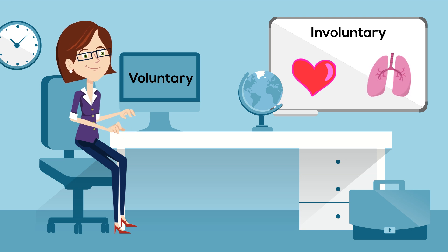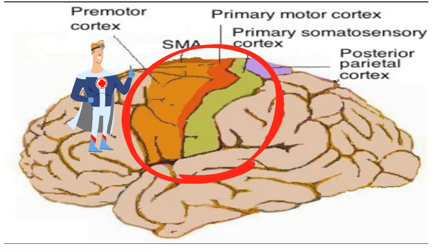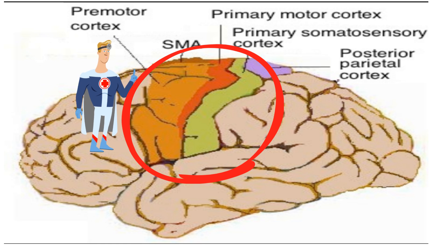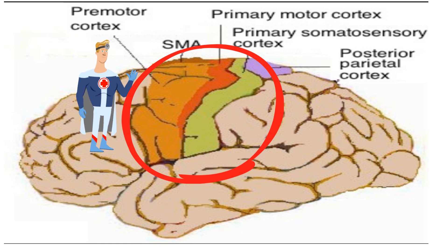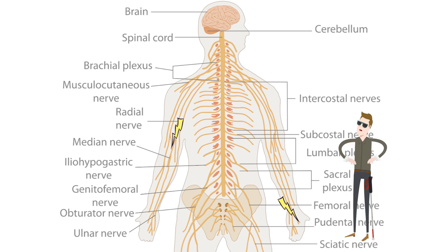The motor cortex is the region of your brain involved in planning, control, and execution of voluntary movements. Your brain sends signals down the central nervous system and then the peripheral nervous system to stimulate muscular movement.